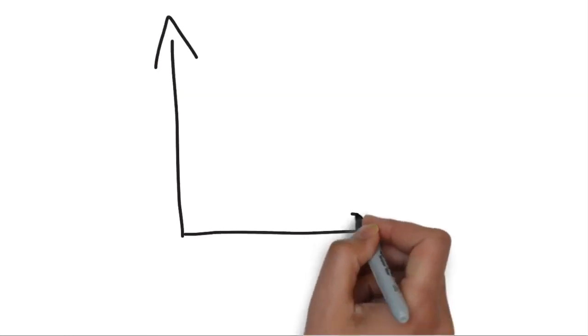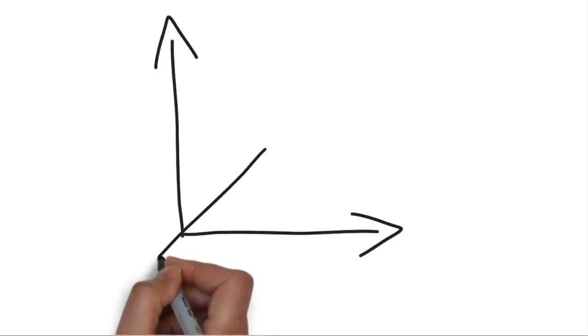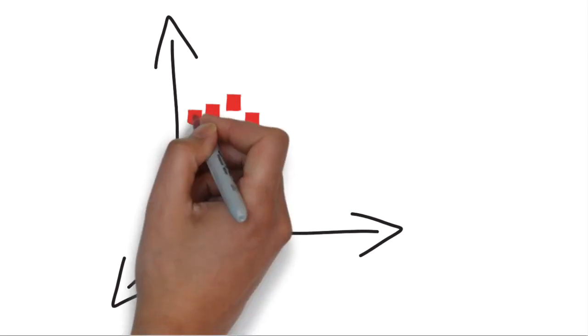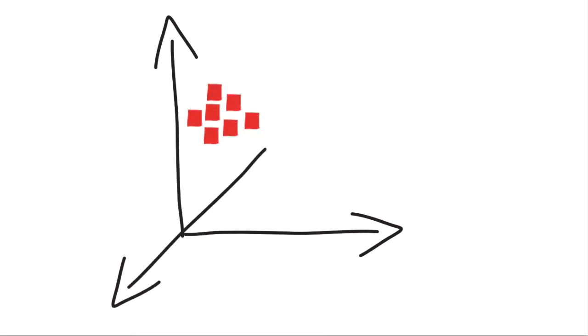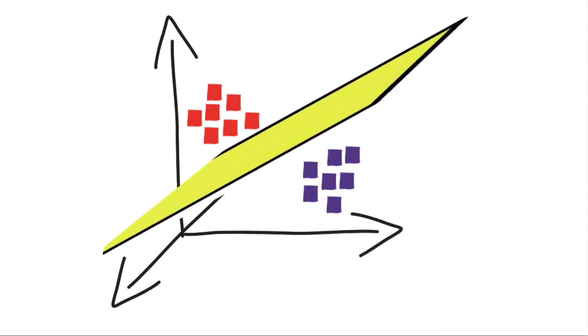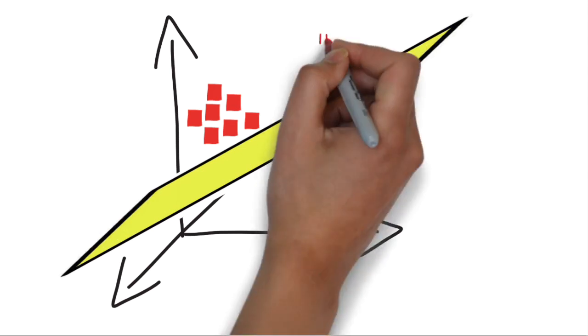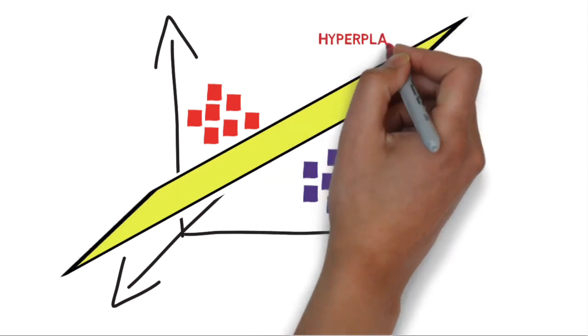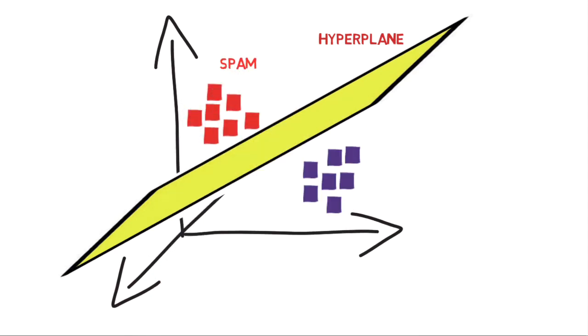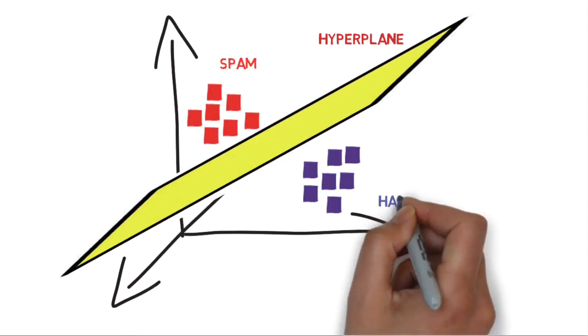Let's see how a support vector machine can be represented visually. Let's take our email spam detection problem again. You have a bunch of emails that are already marked as spam and ham. Take these points and represent them in an n-dimensional space. Let's call this our feature space. What the support vector machine does is it finds a hyperplane that neatly separates the two categories, spam and ham.